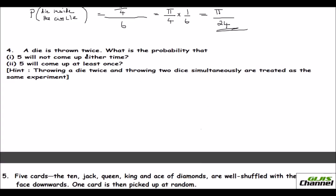The fourth problem: a single die is thrown twice. Note that throwing one die two times is the same as throwing two dice simultaneously. The total outcomes equal 6 times 6, which is 36, since a die has 6 faces. So the total sample space is 36.